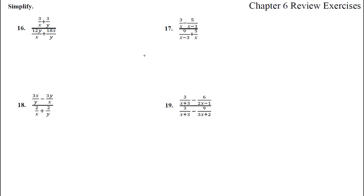Here we are in Chapter 6 Review Exercises, number 16 through 19, with these complex fractions. First we're going to take the top and add them with the common denominator. We'll have to times by a y and a y and an x and an x. So we get 3y plus 3x over xy.